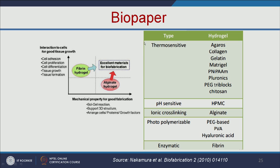Various examples of biopaper include thermosensitive biopaper based on agarose, collagen, and gelatin; pH-sensitive biopaper; ionic cross-linking with alginate; and photopolymerizable PEG-based or PVA-based biopaper. Among these, fibrin hydrogel and alginate hydrogel are very good materials for biofabrication. Fibrin hydrogel has very good cell attachment, cell proliferation, cell differentiation, and tissue growth properties. Alginate hydrogel has good mechanical properties and supports 3D structure, arranging cells, proteins, and growth factors.